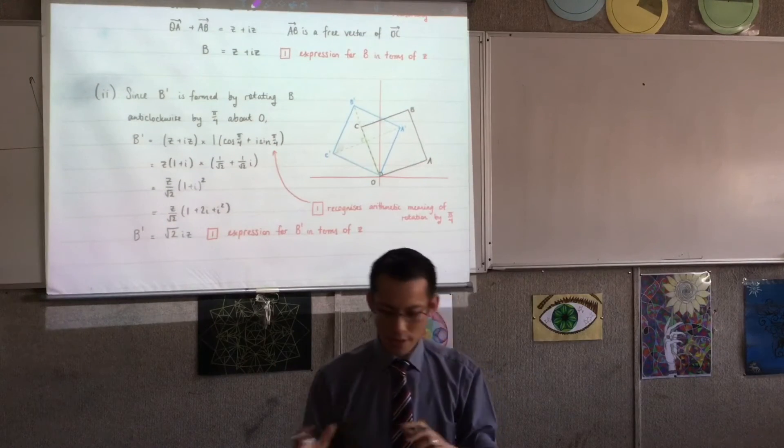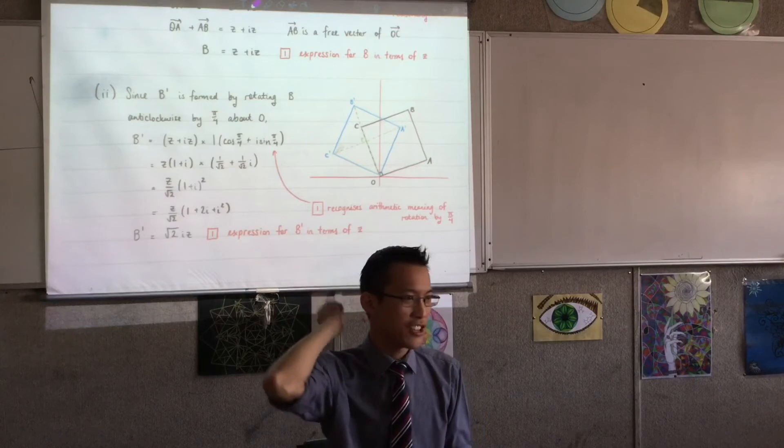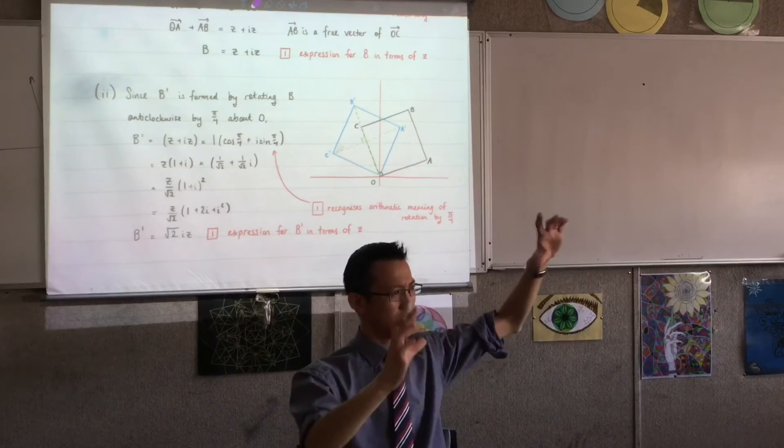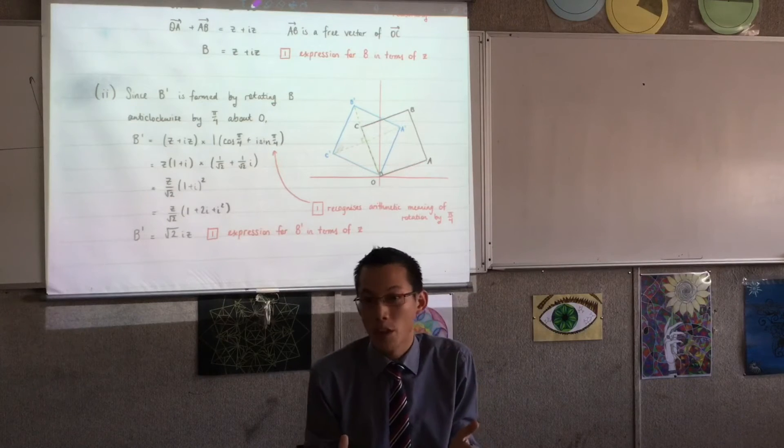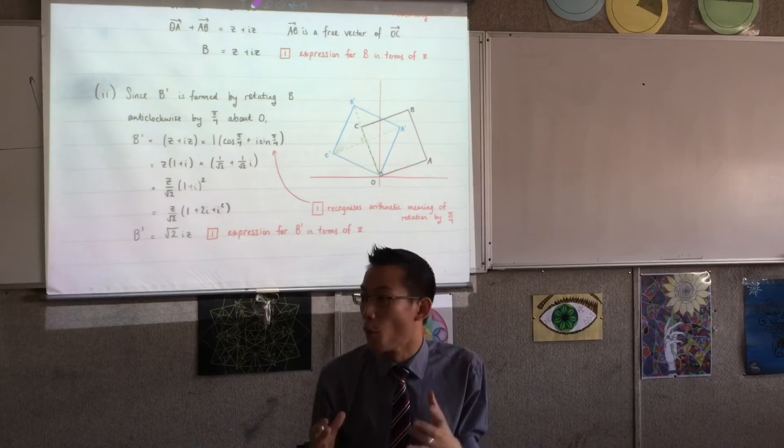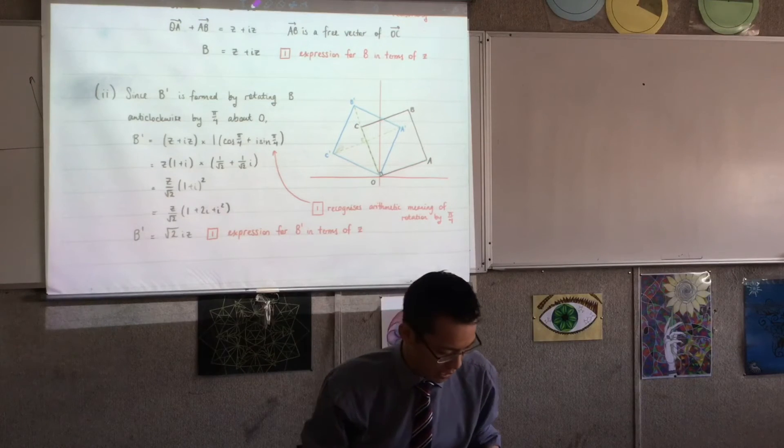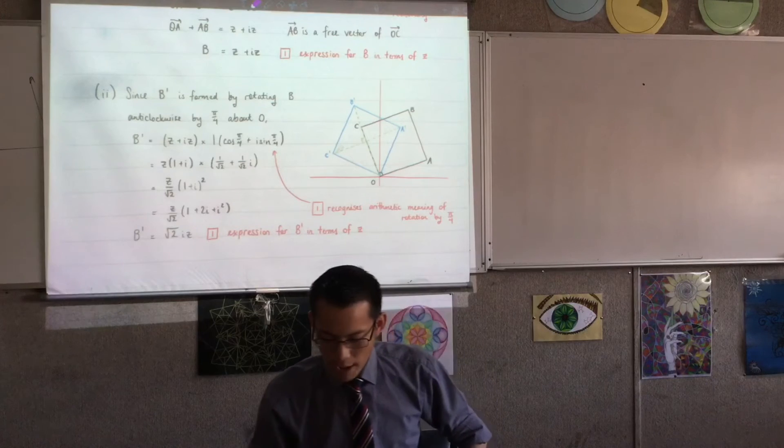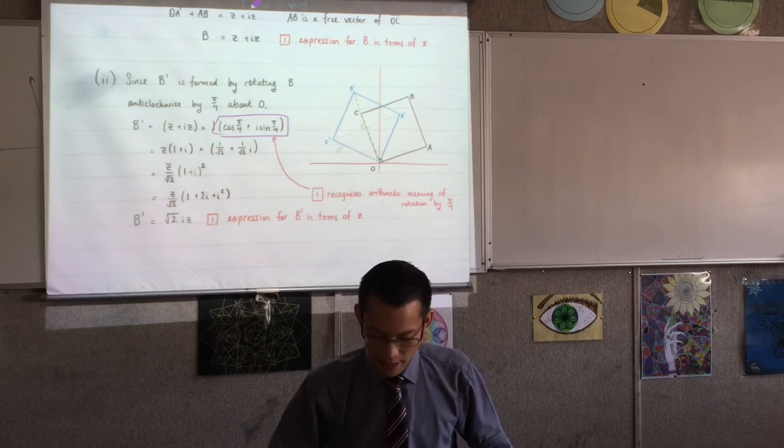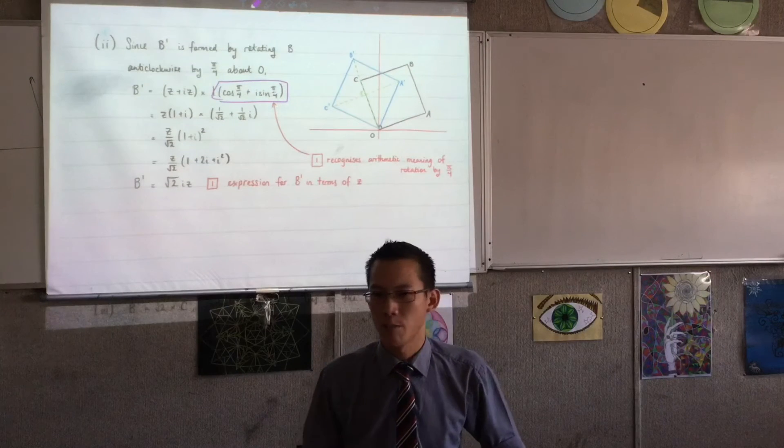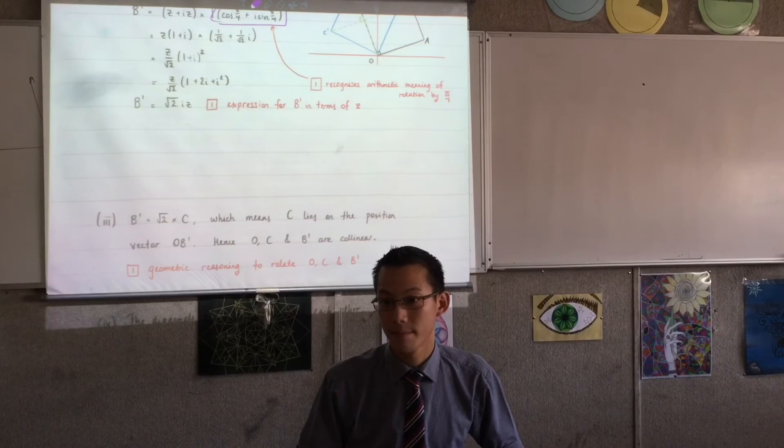I suppose it didn't surprise me if you did poorly on the vector geometry question, vector complex number question in multiple choice. This was also poorly done. Draw yourself a diagram. I know you've got one there. Draw yourself a diagram because you'll understand what's going on much better if you do. You have to show some kind of geometric reasoning here because there's two marks.